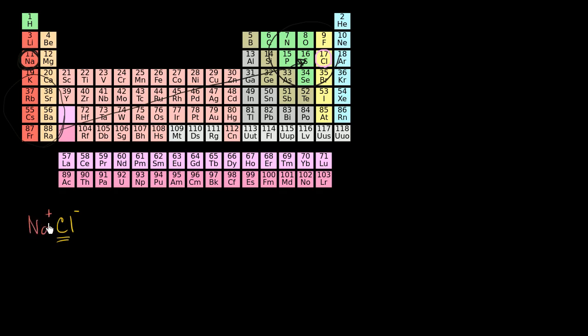This one right over here is now positive. Sodium is now positive. Chloride is a negative ion. They're going to be attracted to each other and they're going to form this ionic bond. This right over here is an ionic bond.